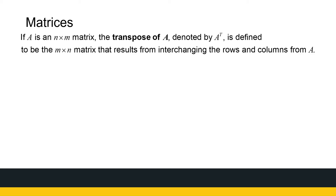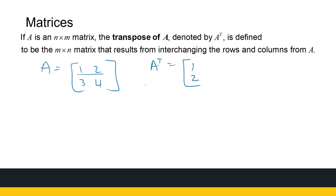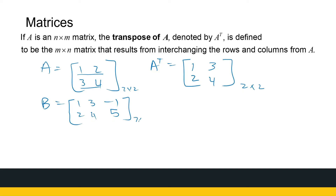Something we can do with a matrix is transpose it. If A is the matrix with entries 1, 2, 3, 4, then A transpose is the matrix you get by interchanging the rows and columns — the first row becomes the first column, the second row becomes the second column. These are both two-by-two matrices where one is the other's transpose. It doesn't have to be square — if matrix B is a two-by-three matrix with entries 1, 3, -1, 2, 4, 5, then B transpose is the three-by-two matrix with entries 1, 3, -1, 2, 4, 5 rearranged accordingly.